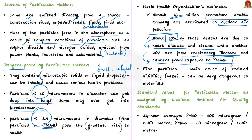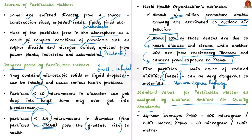Fine particles are also the main cause of reduced visibility, or haze, which can be very dangerous — as seen in frequent accidents on the Yamuna Expressway. According to the National Ambient Air Quality Standards of the Central Pollution Control Board of India, the 24-hour average of Particulate Matter 10 is 100 micrograms per cubic meter and for Particulate Matter 2.5 it is 60 micrograms per cubic meter.